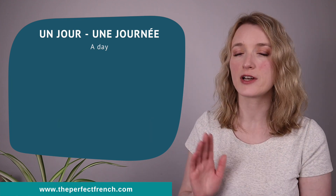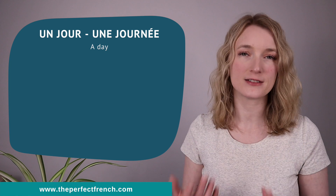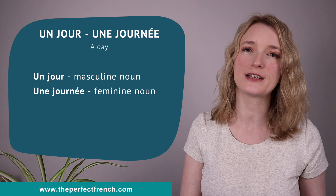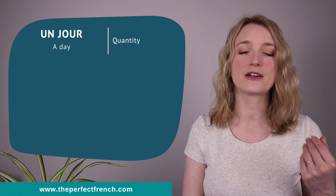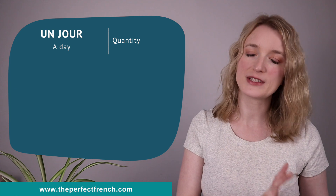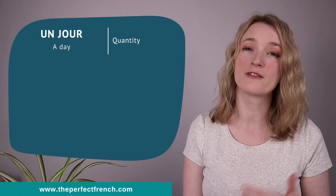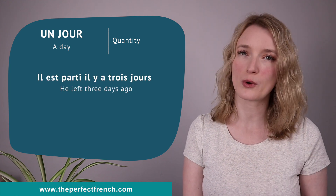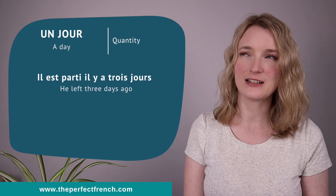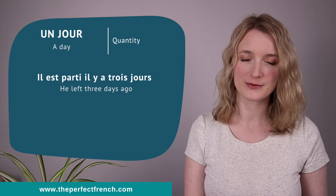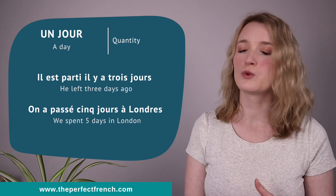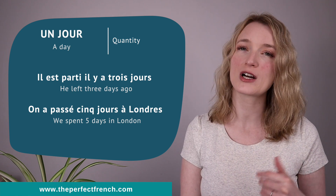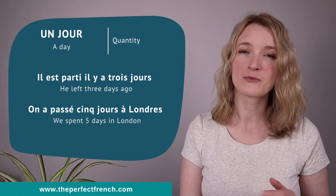Now we are going to look at un jour and une journée — they both mean a day. Un jour is a masculine noun; une journée is a feminine noun. For quantity, we use un jour. For example, il est parti il y a trois jours. On a passé cinq jours à Londres. Quantity.